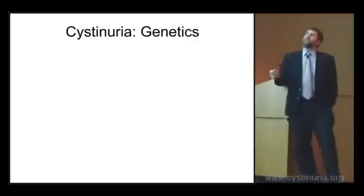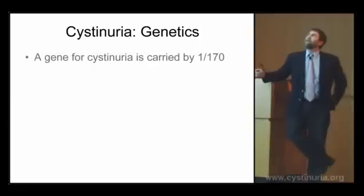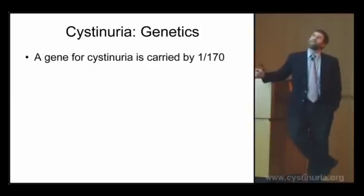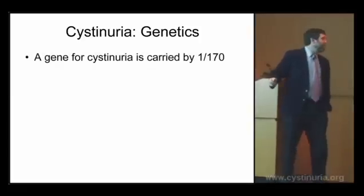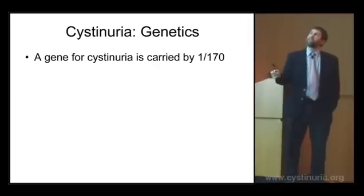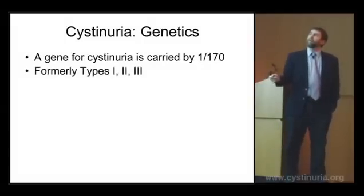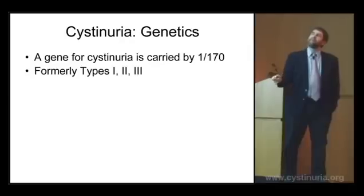The gene for cystinuria, or one of these genes, is carried by about one out of 170 people. Originally you may be familiar with a classification where these were types 1, 2, and 3. Now we're going to talk about types A and B.